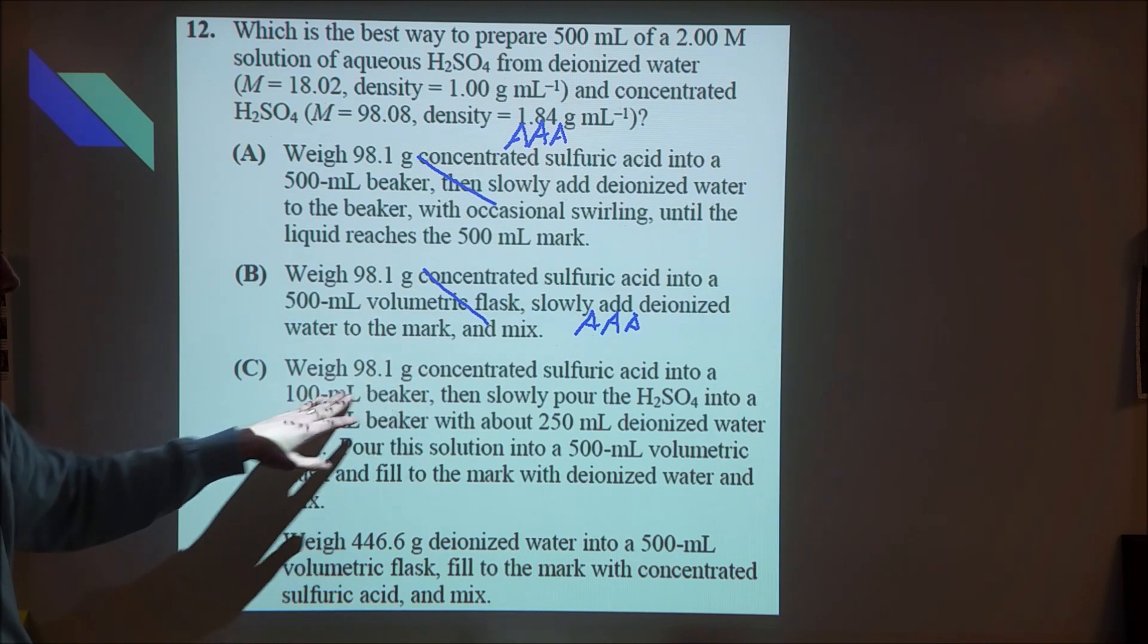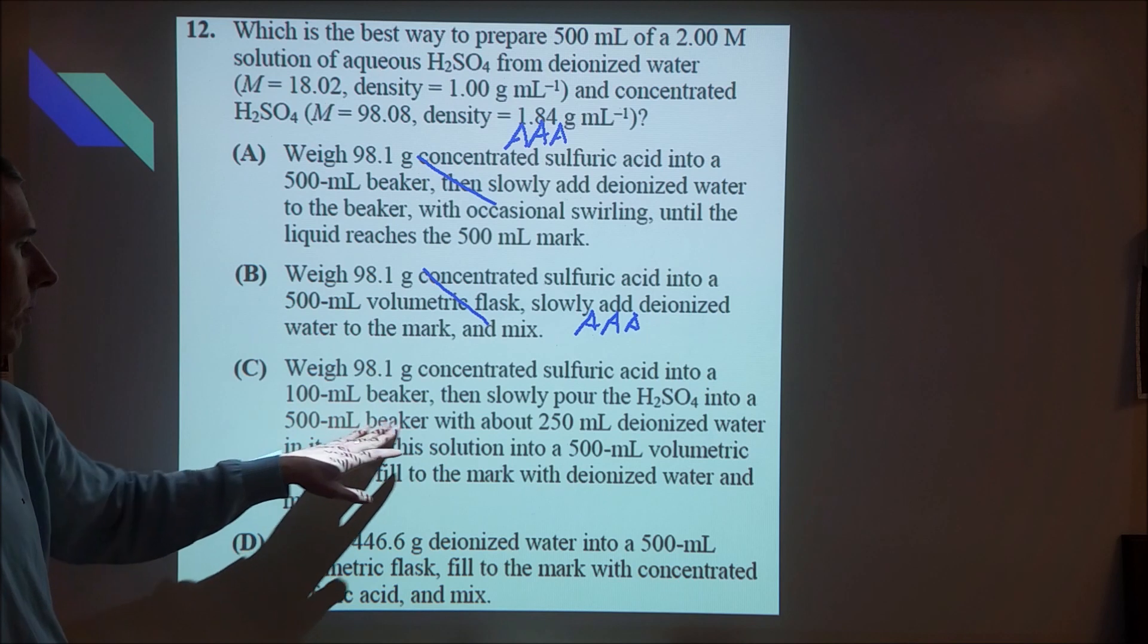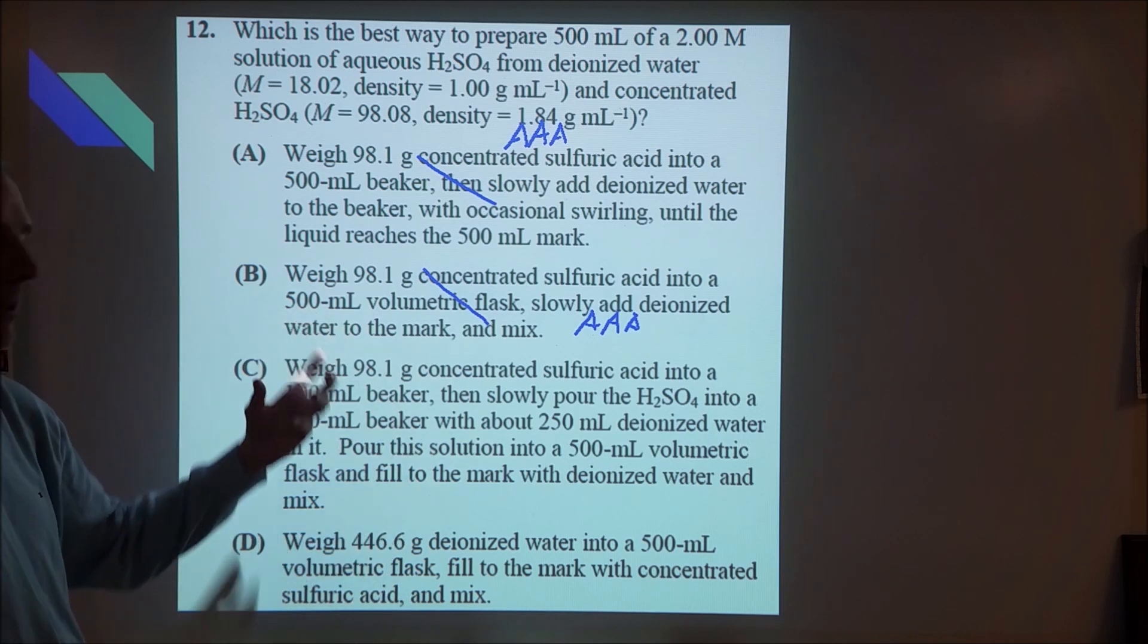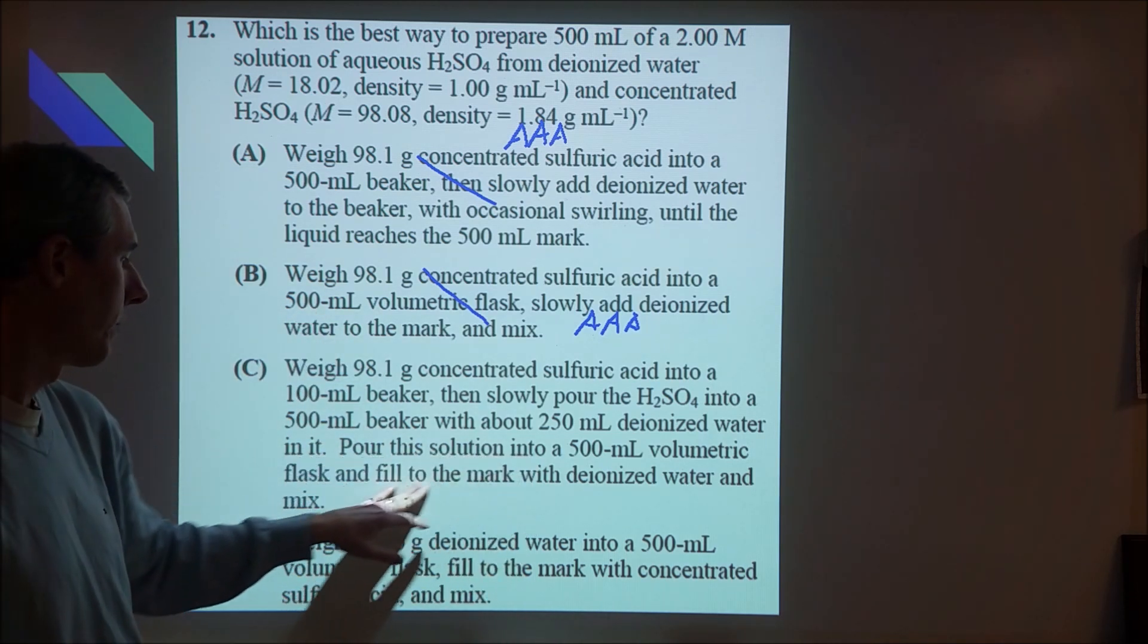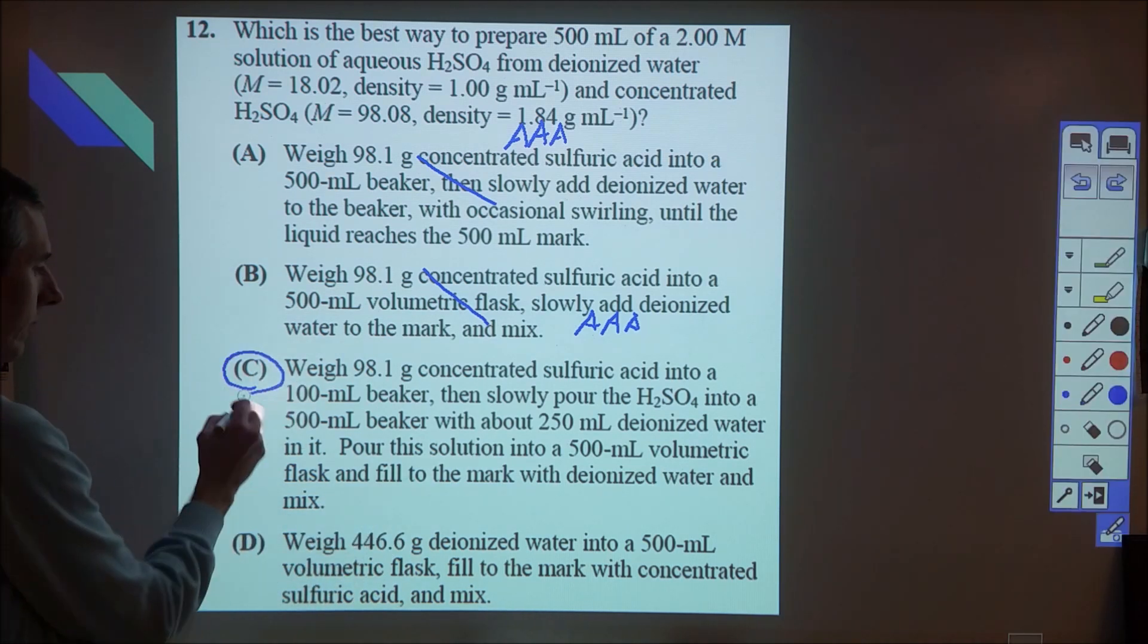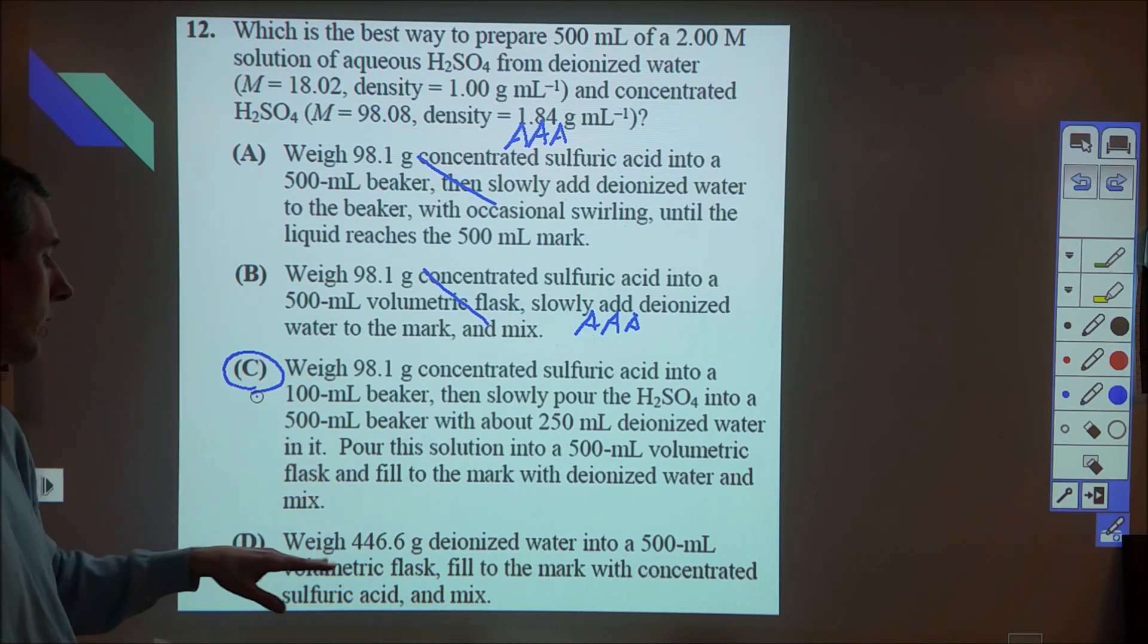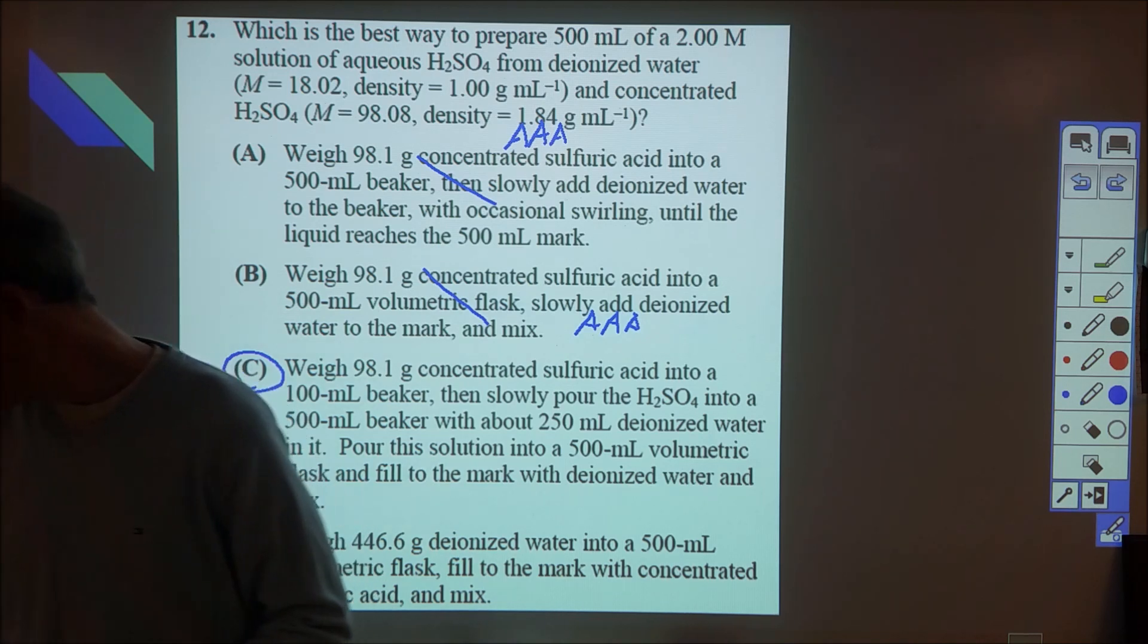In option C, they're putting the sulfuric acid into a beaker for storage, then into another beaker with some deionized water but not enough to make the entire solution, so they're reducing some of that heat. Then they put that into a volumetric flask and fill to the mark with deionized water. C looks good, but we can double check – D would fill with sulfuric acid, ignoring any mixing volume changes. So C is our good answer there.